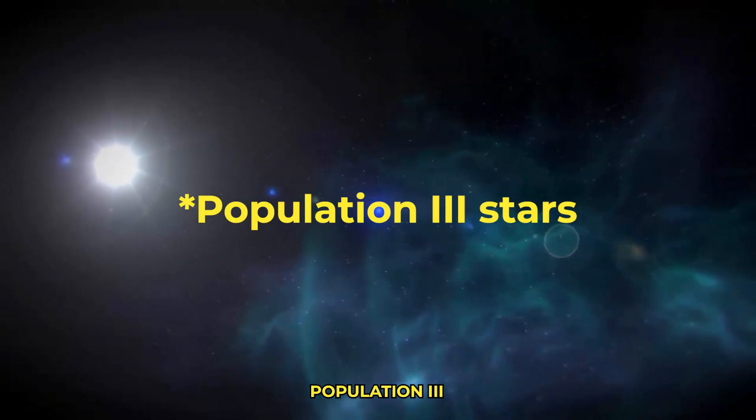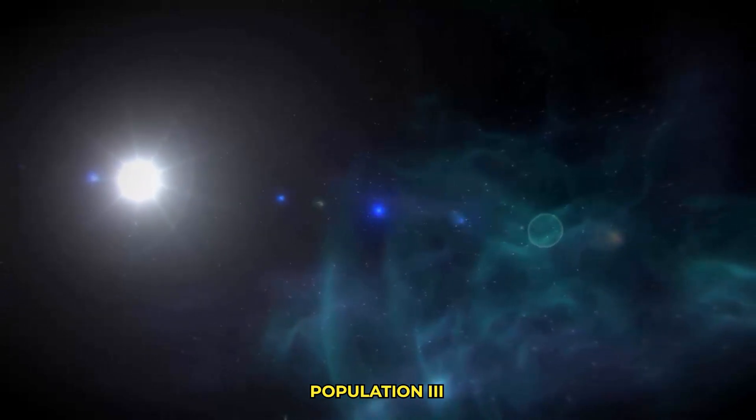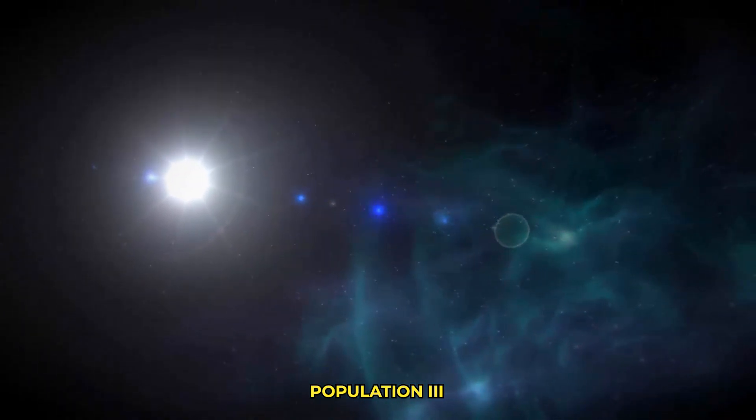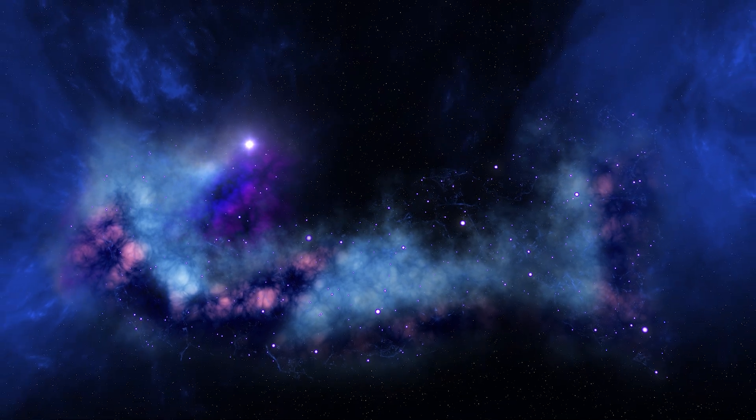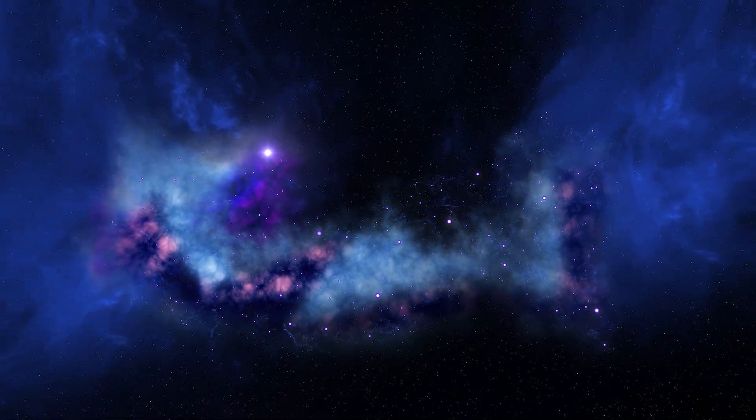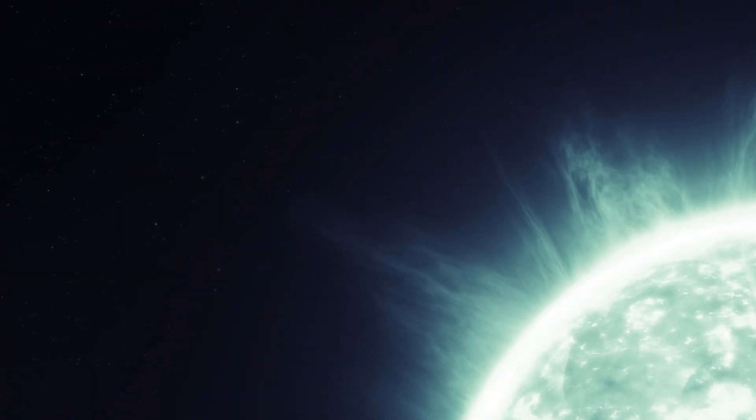And finally, Population 3 stars are the hypothetical first generation of stars, with no metallicity, composed almost entirely of hydrogen and helium. They formed from primordial gas soon after the Big Bang and are thought to be very massive and short-lived.